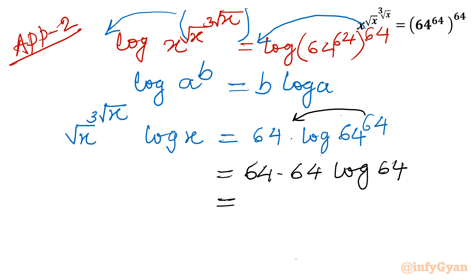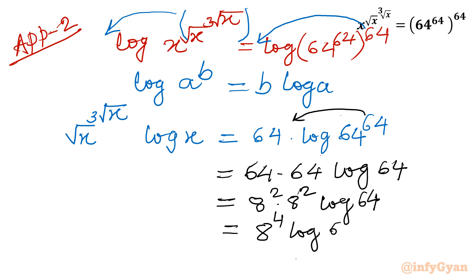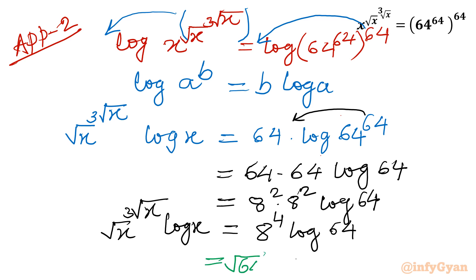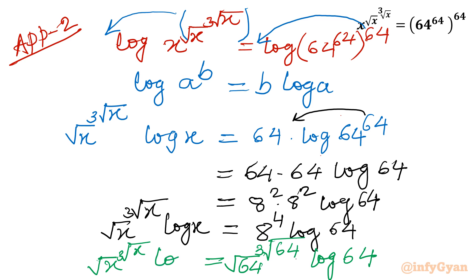Now writing 64 as 8 squared and 64 as 8 squared again gives 8 power (2+2) using the exponent property, times log 64. On the left-hand side we have square root x power cube root x times log x. Writing 8 as square root of 64 and power 4 as cube root of 64 and then log 64. Comparing both sides, we conclude x is equal to 64 using the log method.